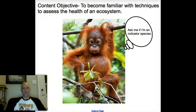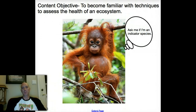The way we're going to do this, in addition to this little flipped lecture, is we're also going to be going to a riparian ecosystem, which is like a creek habitat, an aquatic habitat, and we're going to apply some of the things we talk about today to that ecosystem to determine whether it's healthy or not.